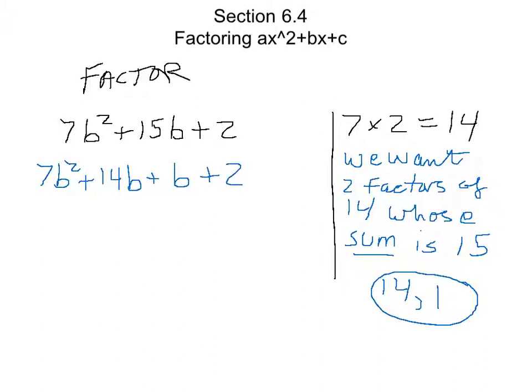And now we have four terms and we use grouping. I factor out of the first two, 7b, and I get b plus 2. Now, this is a little confusing, but if I look at right here, I already have b plus 2. So I can write it like that.